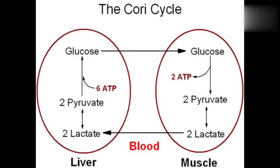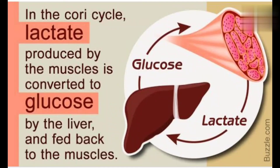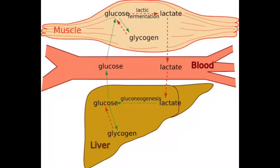The lactate is in the bloodstream and is oxidized to pyruvate. This pyruvate undergoes gluconeogenesis — that is, the process of generating new glucose. So we have pyruvate in the liver, and that pyruvate converts into glucose, which is then carried back to the muscles.